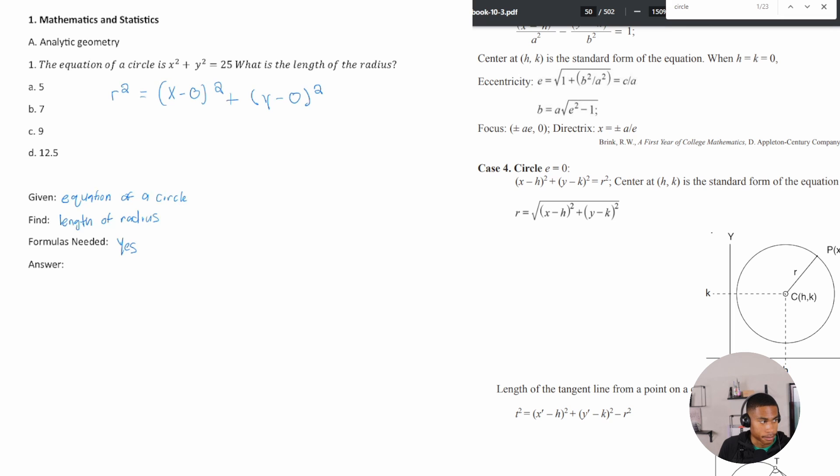So we just substitute those. So how do we get our answer, right? So if we know that r squared is 25, what is r? R equals the square root of 25, which equals five.